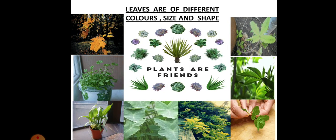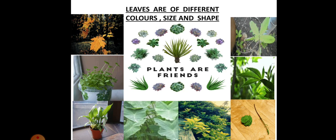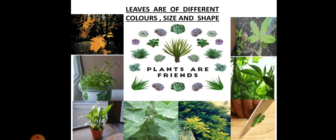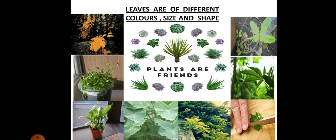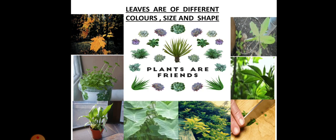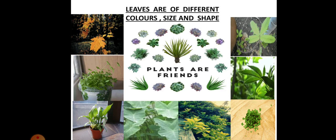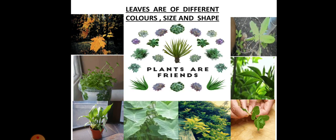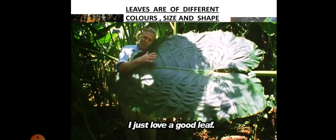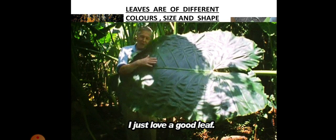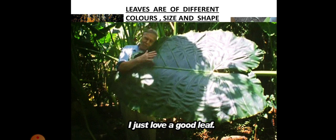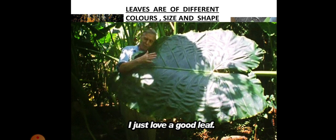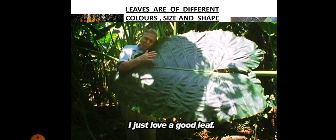Now leaves are of different colors, sizes and shapes. Look at them. The beautiful colors. The orange. The green. The yellow leaves. The big and the small. The thin and the tiny ones. And I have got a surprise for you. Look at this leaf. Wow what a huge one. Isn't it? So leaves are of different colors, sizes and shapes.